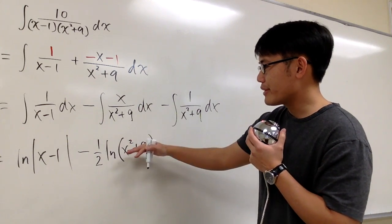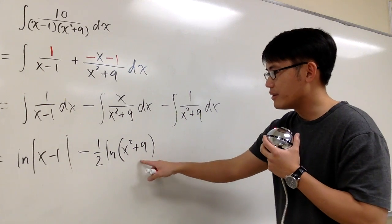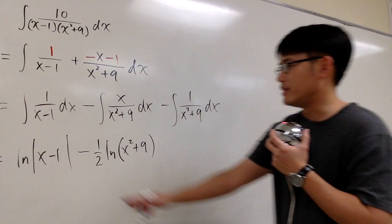So u substitution right here, that u is equal to the denominator, and work this out. I use parentheses because right here, the inside is never negative. So don't worry about that. Don't worry about the absolute value unlike the first one.